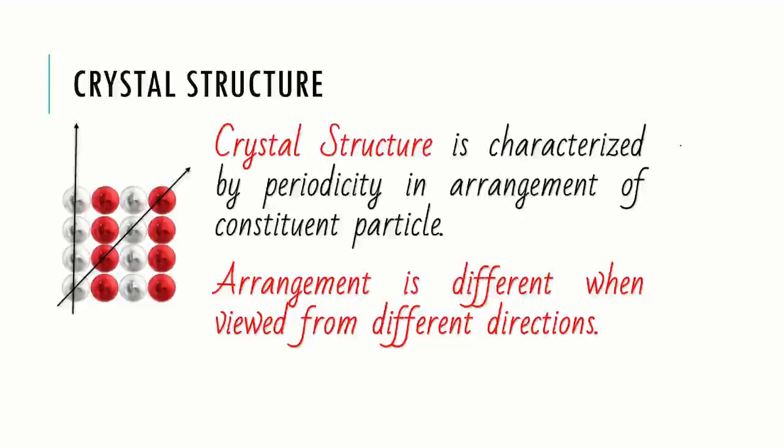The origin of anisotropy can be explained by simple arrangement of two kinds of spheres. The spheres are periodically arranged as you can see. Now we take two different directions and look at the sequence of spheres.